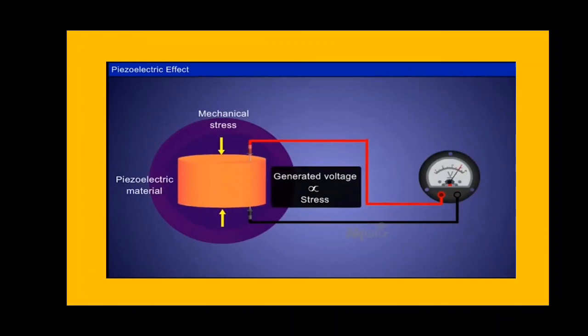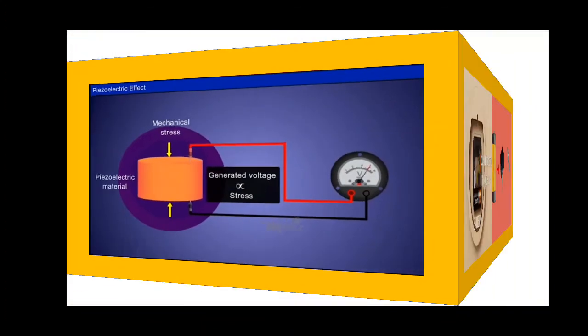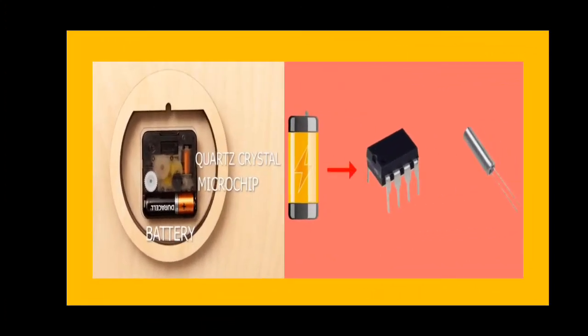Here you see, whenever a mechanical stress is applied along the quartz crystal, then a potential difference is created. So what does this picture show? Whenever a mechanical stress is given to a crystal, it produces an electric potential difference. The reverse of this also is possible, which is used in quartz clocks.